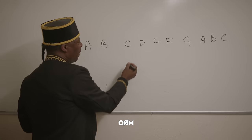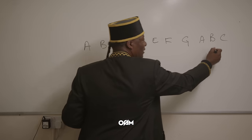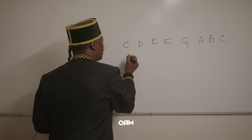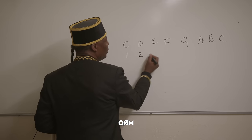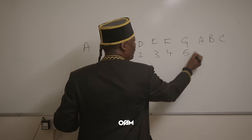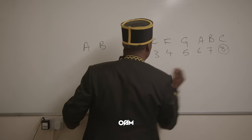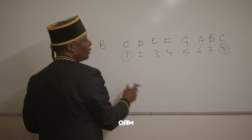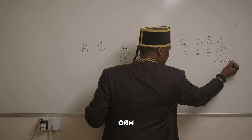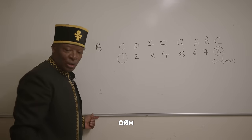So these would be your eight notes: do, re, mi, fa, so, la, ti, do. They've also got numbers — one, two, three, four, five, six, seven — and the eighth is the same as the one. This is referred to as the octave, and it just starts again.